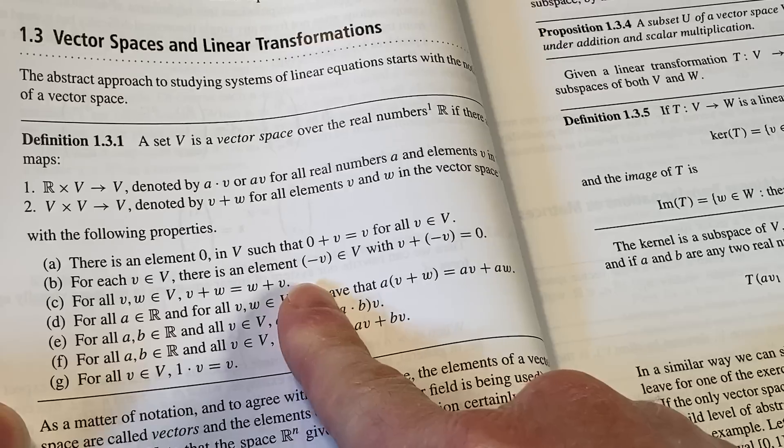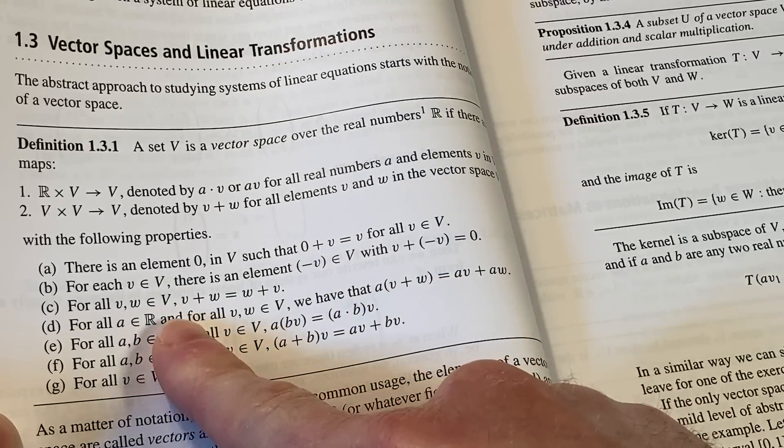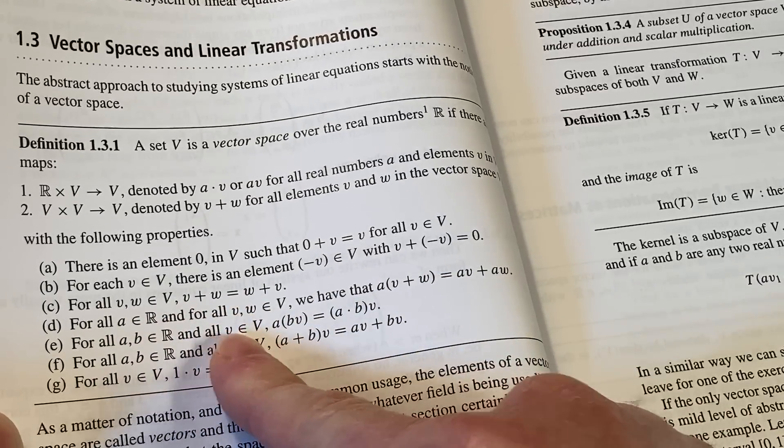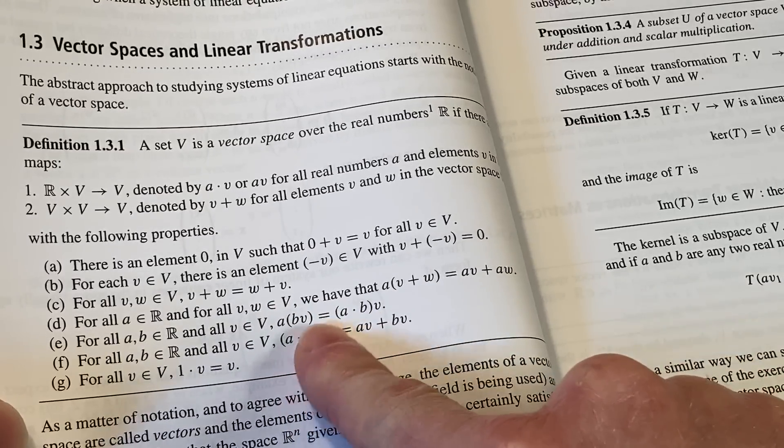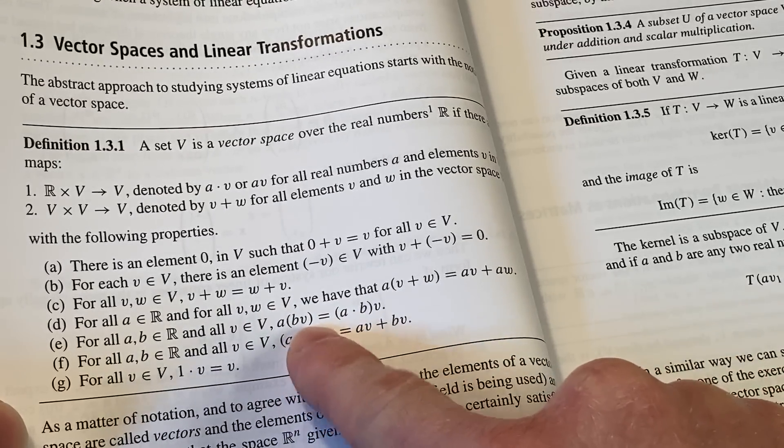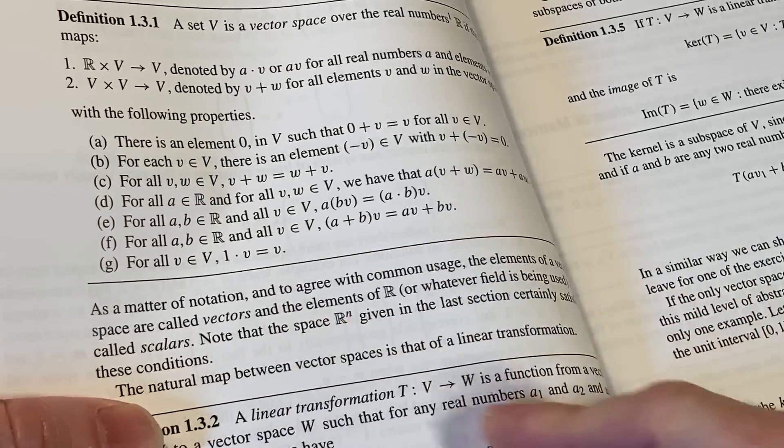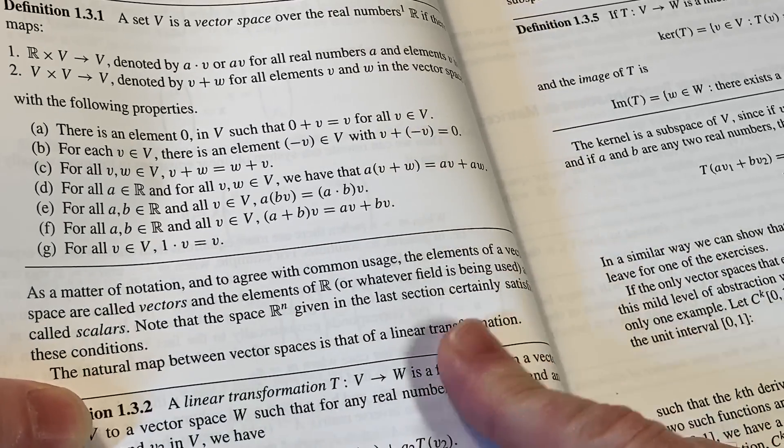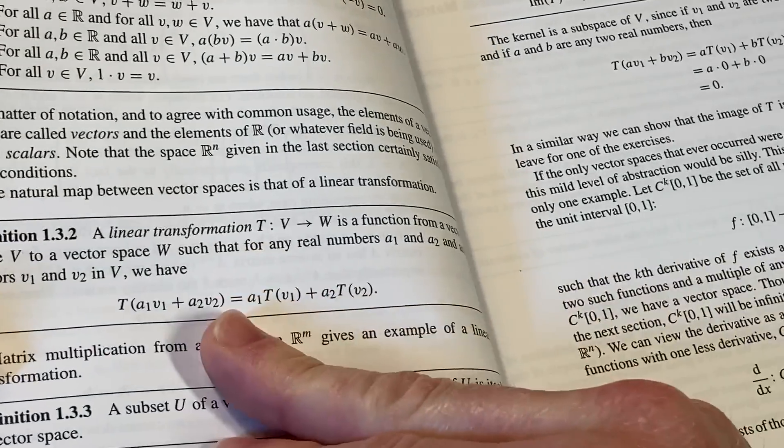So yeah, there's an element zero for each V. There's an element negative V. It's the inverse. The addition is commutative. You have the distributive law. And then you have associativity like this, which is pretty cool. And then you have another distributive law there. So pretty cool. Pretty useful. Here's the definition of a linear transformation.